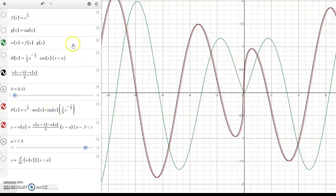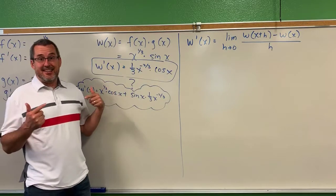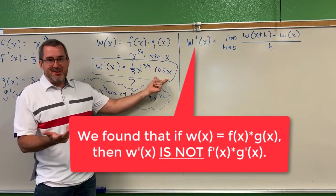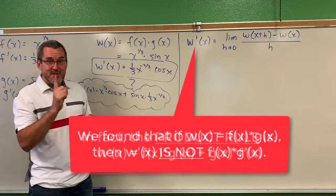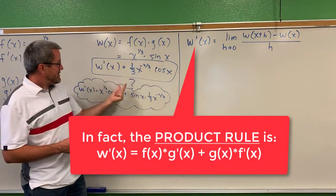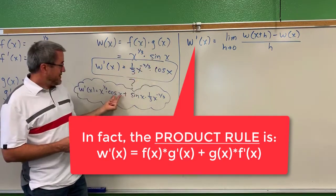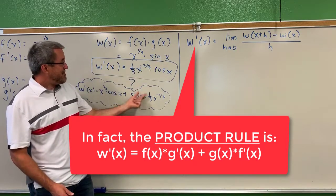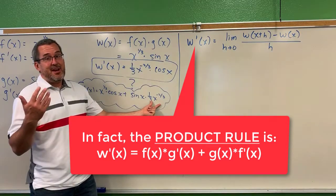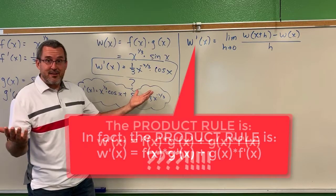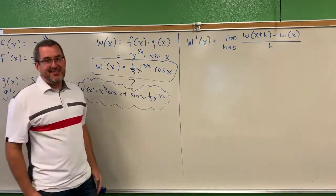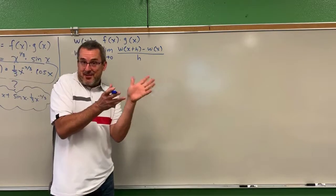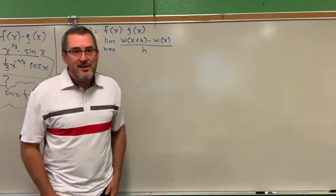As you saw on Desmos, taking the derivative of a product by just taking the derivative of the two function factors does not produce the correct result. What does produce the correct result is: take the first function, multiply it by the derivative of the second function — the derivative of sine of x is cosine of x — plus take the second function and multiply it by the derivative of the first function. But an intelligent person should be asking: where did you get that from? Let's find out.